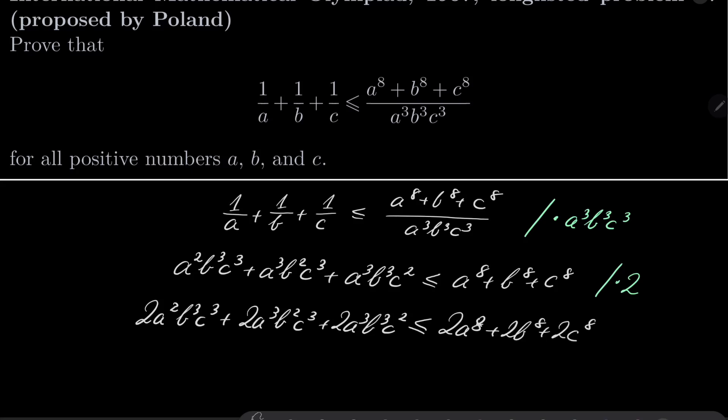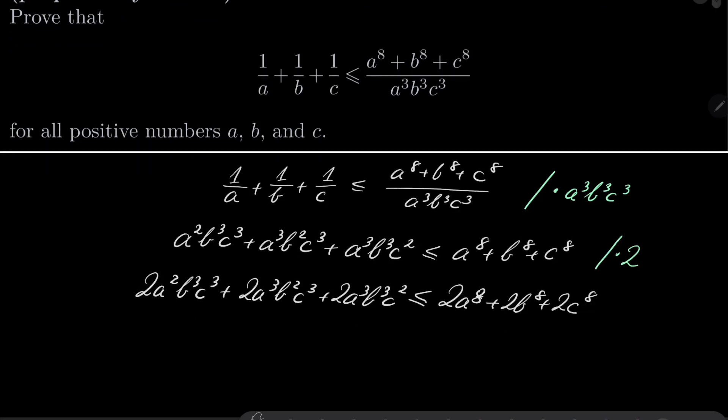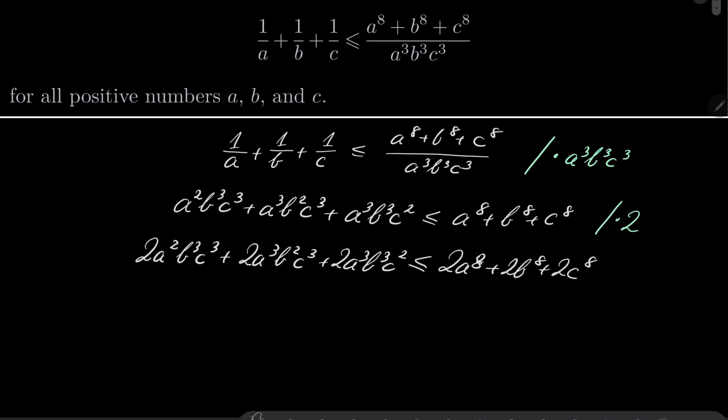Alright, now it's time to introduce some new notation. The expression on the left hand side can be expressed in this compact way. It's sum over all permutations of abc, which I will denote by sum sub sim, meaning I'm summing over all permutations of abc and every expression is of the form a³b³c².